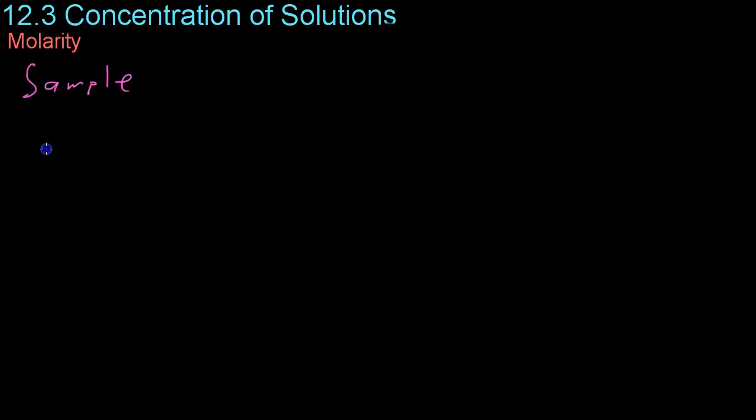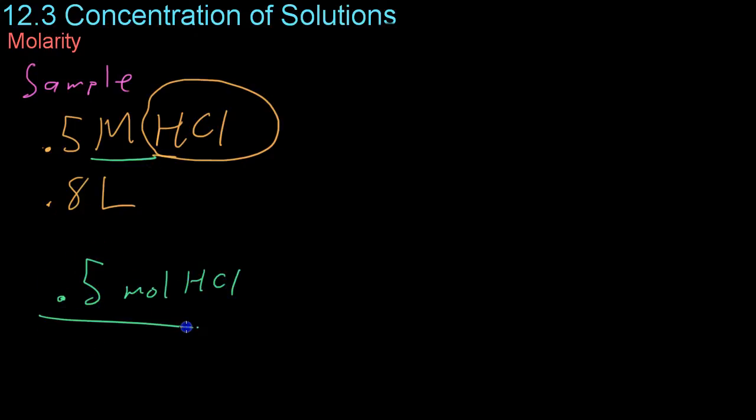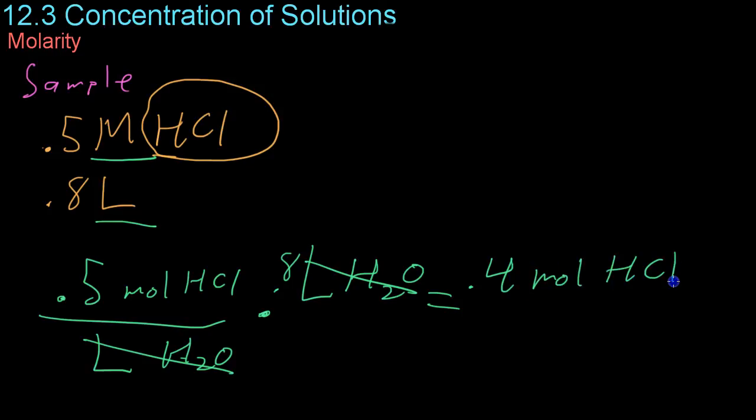Oppositely, you could start with a solution of a known molarity. Let's say a 0.5 molar solution of hydrochloric acid. And let's say you had 0.8 liters of it. You could then use this knowledge to figure out the total number of moles of hydrochloric acid that you have within this solution. All you have to do is use dimensional analysis to figure out how to set up the problem correctly. By the very definition of molarity, you know that you have 0.5 moles of HCl for every liter of water. And then you just multiply by how many liters you have, and you'll notice that they cancel out. In this case, we have 0.8 liters. The liters cancel out, and you end up with 0.44 moles of hydrochloric acid.